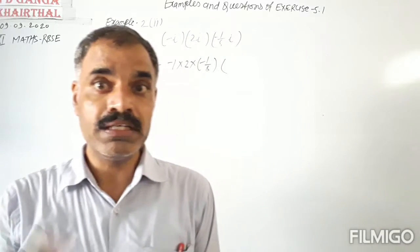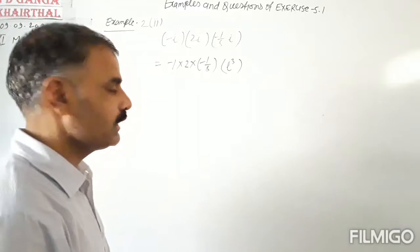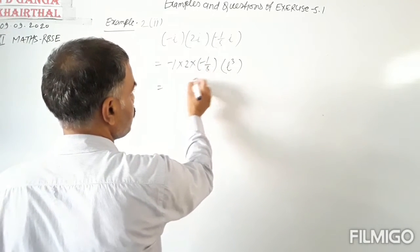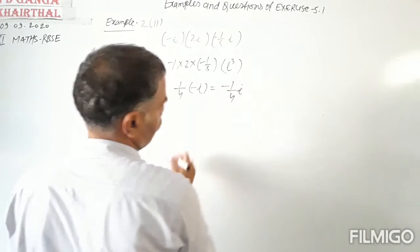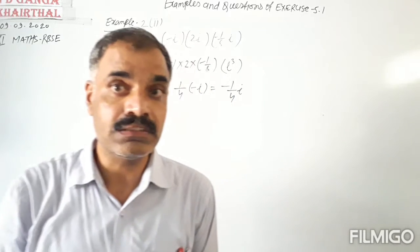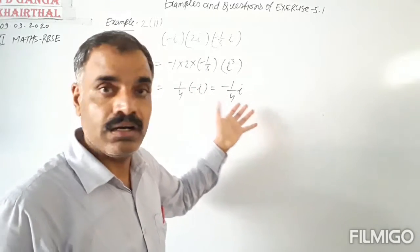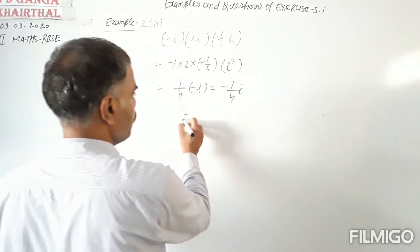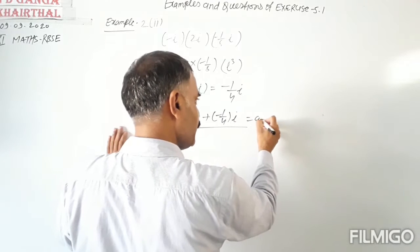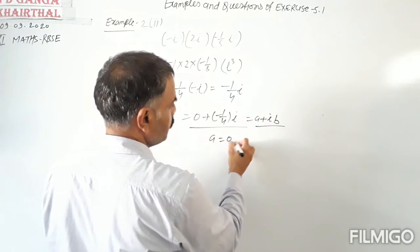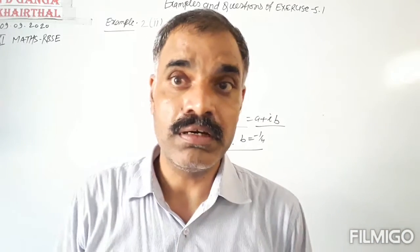The iota terms give us iota to the power 3. So we have: (−1)(2)(−1/8) × i³. The constants multiply to give 1/4, and i³ = −i. Therefore the result is −(1/4)i. Here we have only the imaginary part, no real part. This can be written as 0 + (−1/4)i. Comparing with A + iB, we get A = 0 and B = −1/4. This is the standard form of the given complex number.